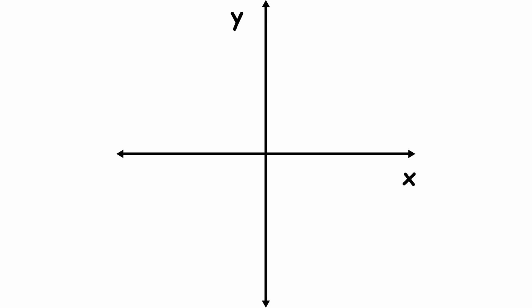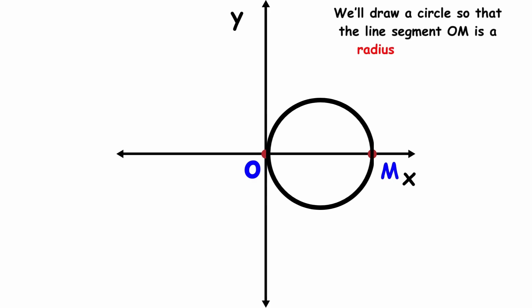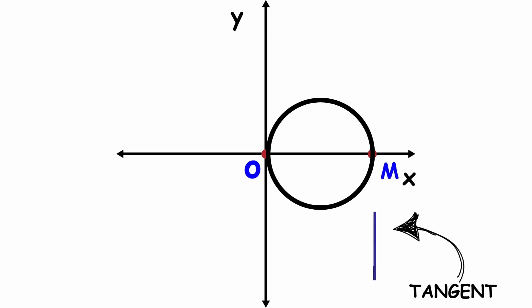Witch of Agnesi. In the Cartesian plane, let's call the origin O, and let's pick some point on the positive y-axis and call it M. We'll draw a circle so that the line segment OM is a diameter of the circle. Then we'll draw the tangent line to the circle at the point M.